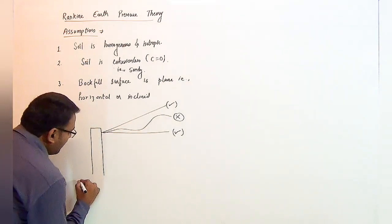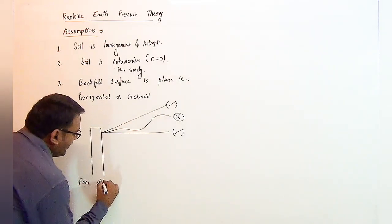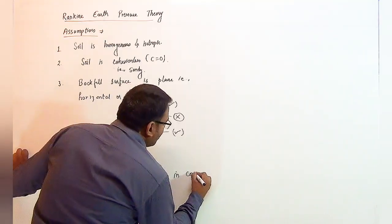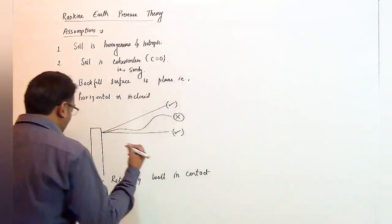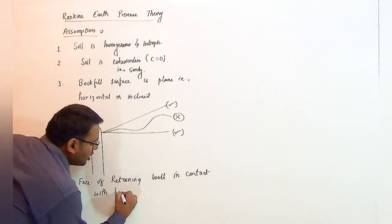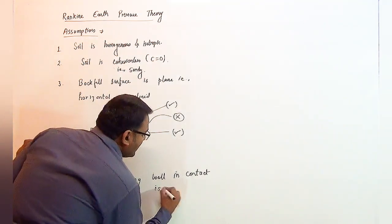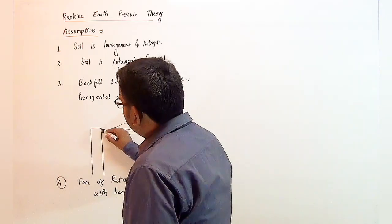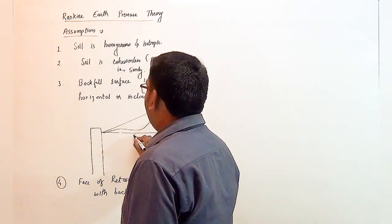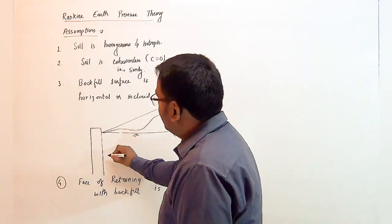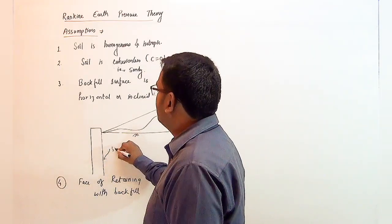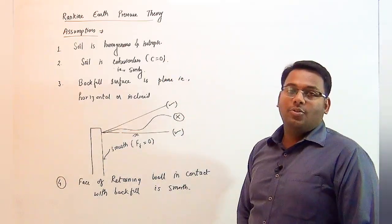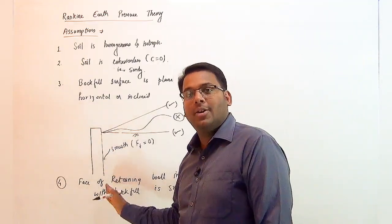The fourth assumption is that the face of the retaining wall in contact with the backfill should be considered as smooth. If this is the face of the wall in contact with the backfill and the soil is filled here, then this face should be smooth — meaning the value of friction equals zero and the friction force will be zero on this face.